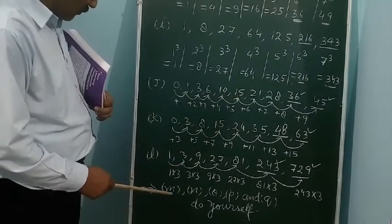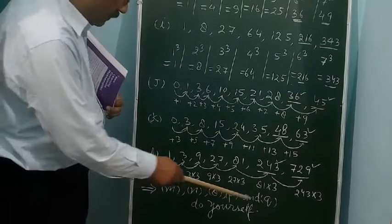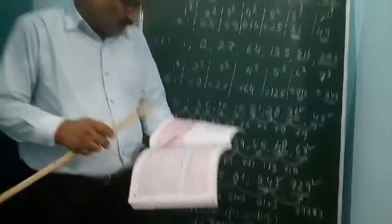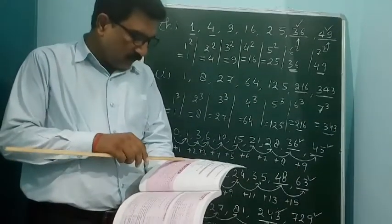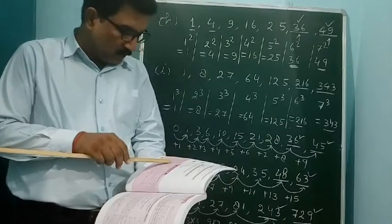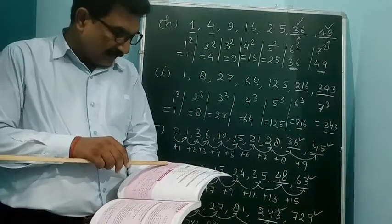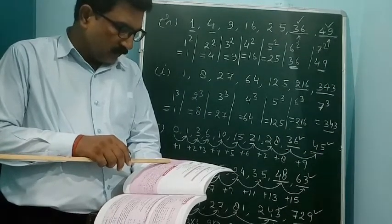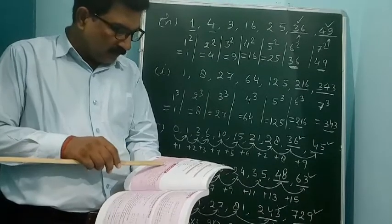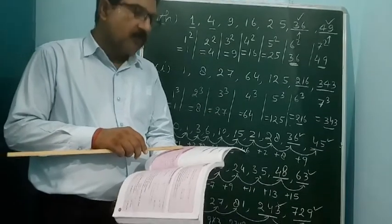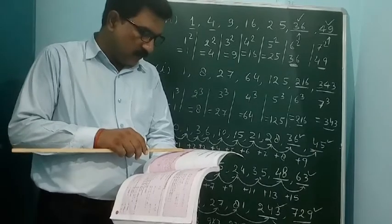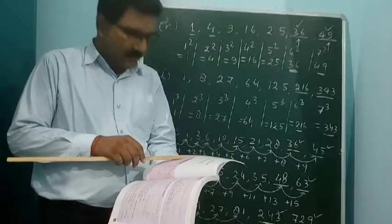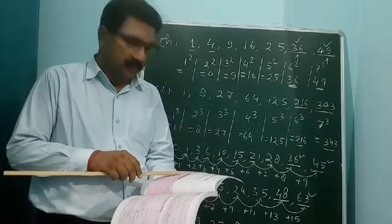Questions M through Q — I want to explain these briefly. Question M: 101, 202, 303, 404. It is increasing by 101. So: 101 plus 101 is 202, 202 plus 101 is 303, 303 plus 101 is 404. The next numbers will be 404 plus 101 = 505, and 505 plus 101 = 606.